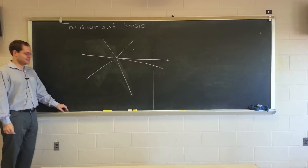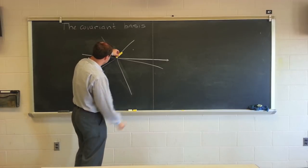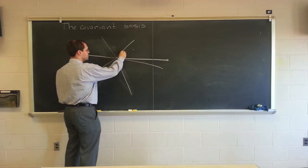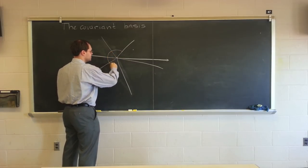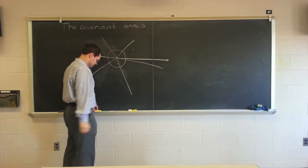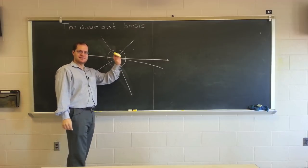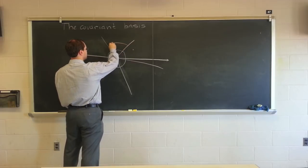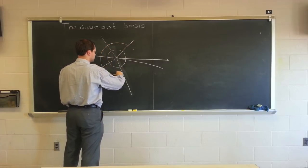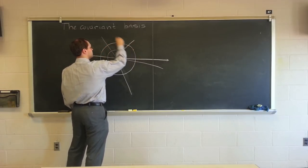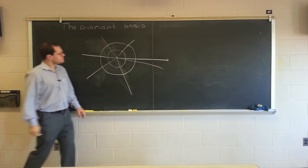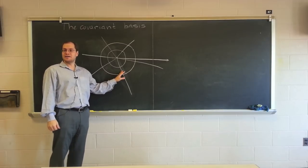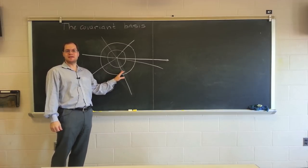These are the lines of constant theta, and here are the lines of constant r. It has to somehow reference the geometric unit that existed in the space before you ever drew a coordinate. So this is r equals 1, this is r equals 2. This is a polar coordinate system. Let's define its coordinate basis.